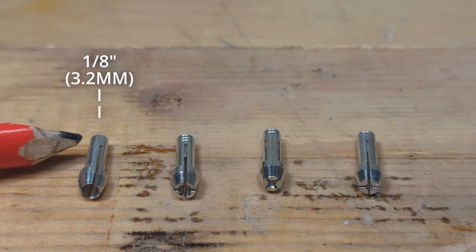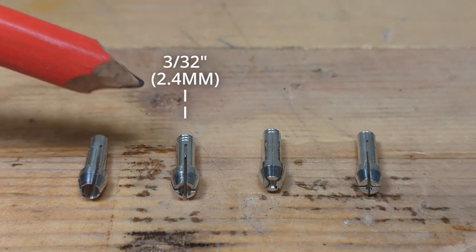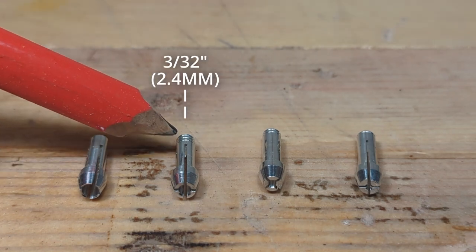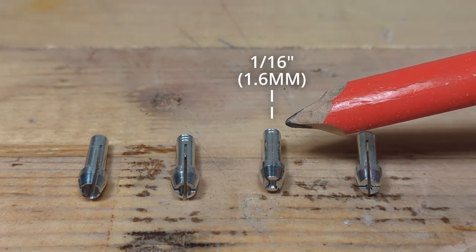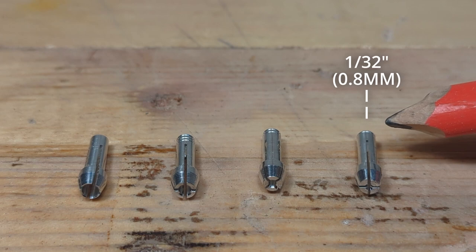The 4 common collet sizes are the 1/8 inch collet which has no stripes at the bottom, the 3/32 inch collet which has 3 stripes at the bottom, the 1/16 inch collet which has 2 stripes at the bottom, and the 1/32 inch collet which has 1 stripe at the bottom.